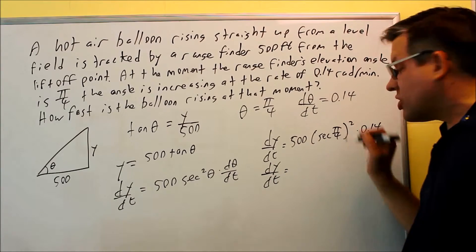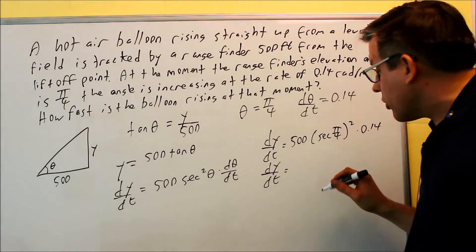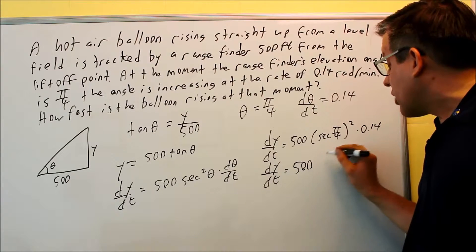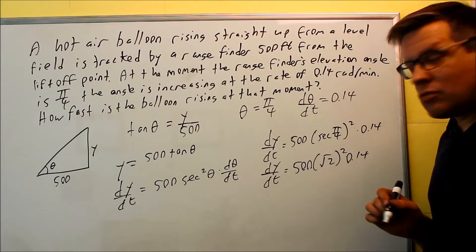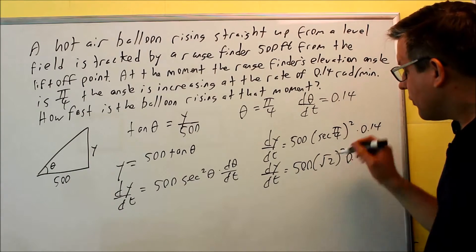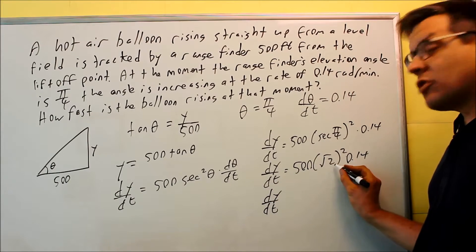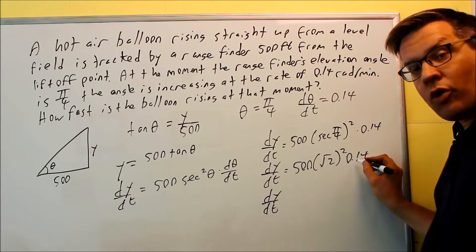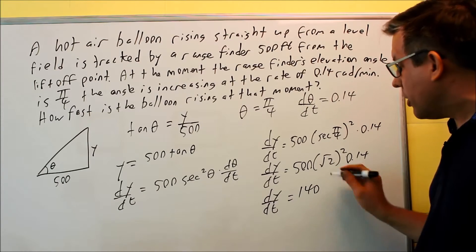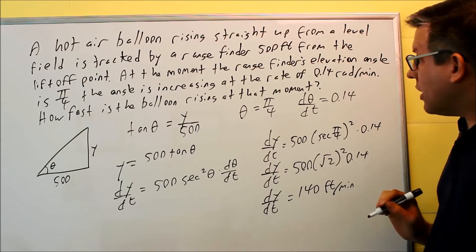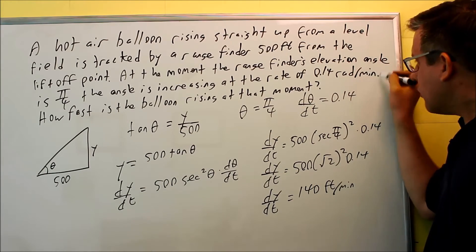So if I do secant of pi over 4, same thing as 1 over cosine of pi over 4. Cosine of pi over 4 is root 2 over 2. So if you take the reciprocal and rationalize, you actually get a square root of 2 for that one. So secant of pi over 4 again is 1 over the cosine. If you work that out, you get square root of 2. If you work the rest of this out, you'll get 500. This will be 2 because it will get rid of the radical. That's 1,000 times 0.14, which means it will move the decimal place three places over. That means that 140 is going to be your answer. Now 140 is going to be in terms of feet per minute. It's feet because the 500 that was given here is in terms of feet, and the unit of time is minutes that we got from this one over here. So this should be rising at 140 feet per minute.